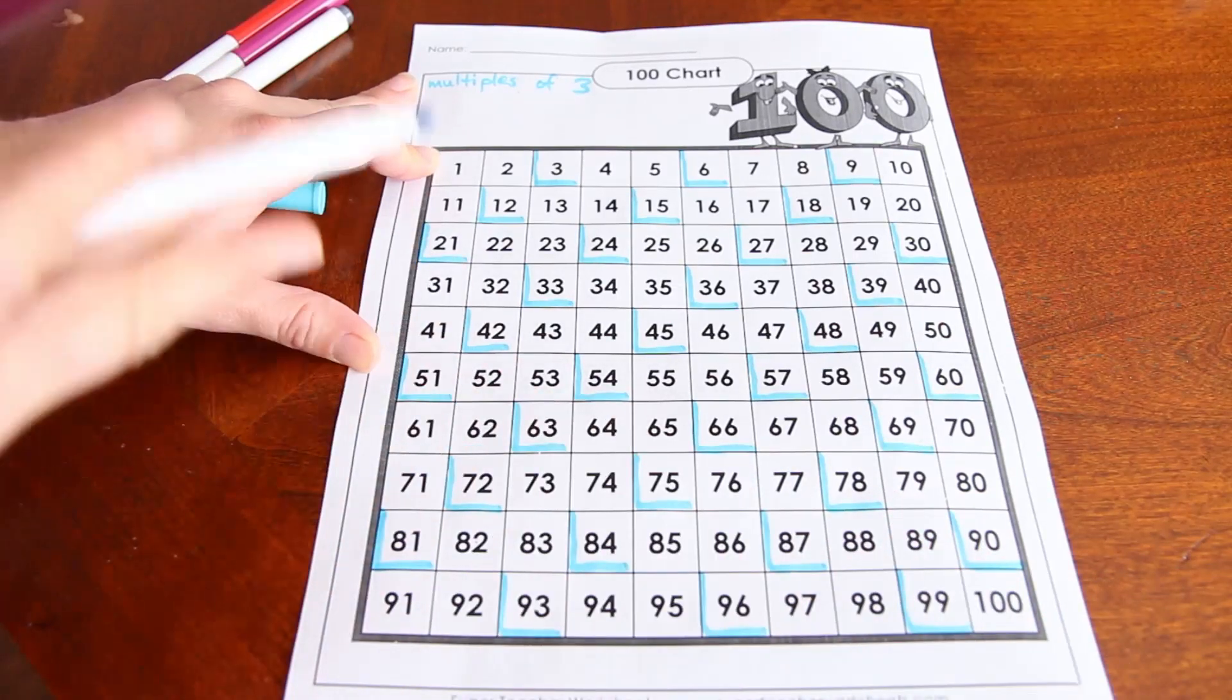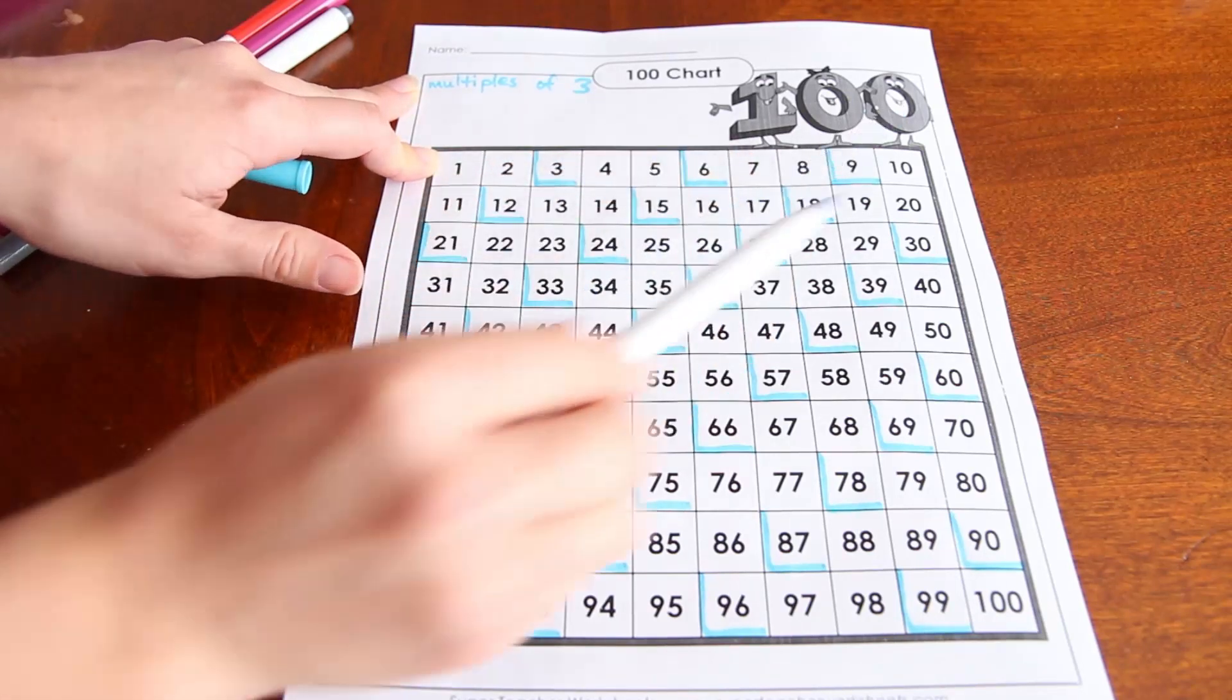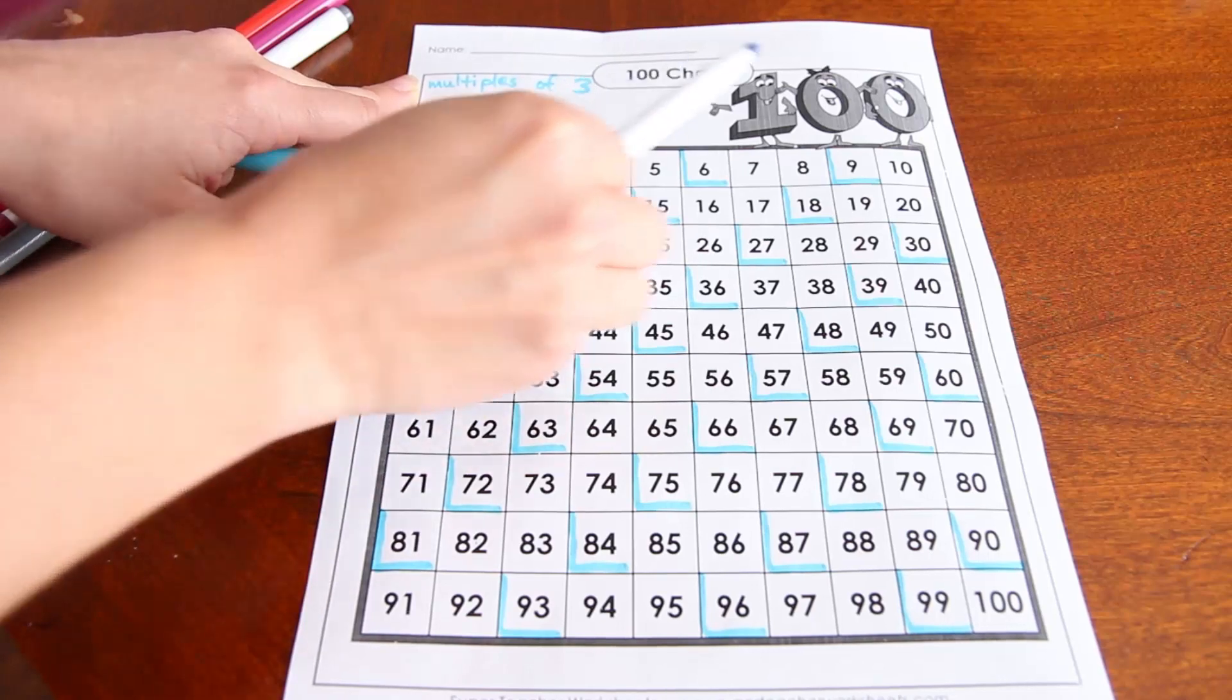And your students might start to recognize that there's this pattern of going down the line too. That 3, and then 12, and then 21, how it makes a line.